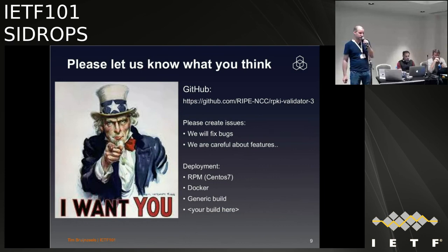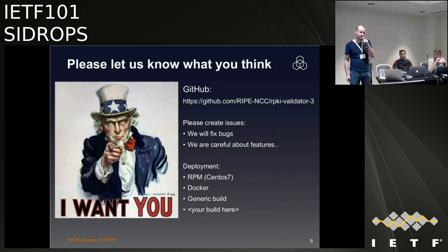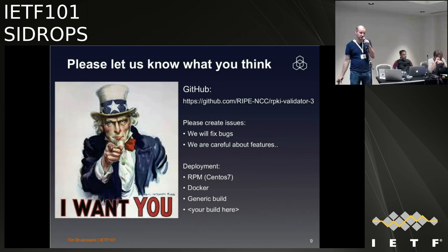For deployments, we currently support RPMs for CentOS 7 because we use it internally — not because everybody should. We made a Docker image as well that might be useful. There are generic builds so you can figure out how to deploy it in other distributions. If people are interested in making distributions for certain platforms and have some authority in those distributions, we'd be very happy to work with you. Please let me know what you think — it's all available on GitHub where you can create issues, talk on the list, or talk to me personally.